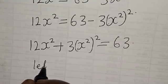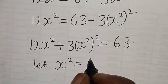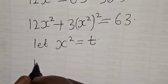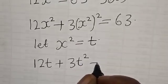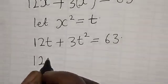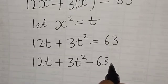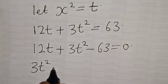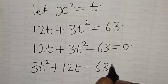Let x squared equal to t. Then we have 12t plus 3t squared is equal to 63. So we have 3t squared plus 12t minus 63 is equal to 0, and let's rearrange this: 3t squared plus 12t minus 63 is equal to 0.